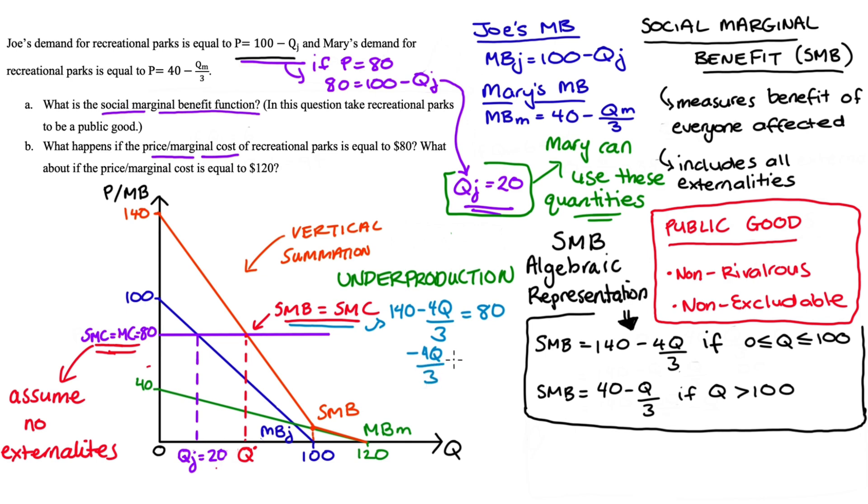I can solve for that quantity variable then and I'm going to start by taking 140 away from both sides so I get -4q/3 is equal to -60. We can multiply both sides by -3 and we get 4q is equal to 180. We then divide both sides by 4 and we get the quantity is equal to 45 that's our q*, our efficient amount.